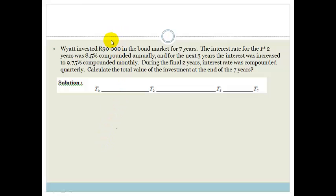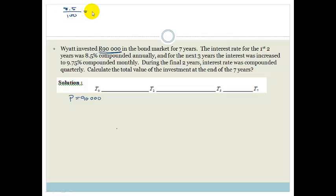At T0, Wyatt's principal was R90,000. He put it in the bond market for a full 7 years. For the first 2 years, the interest rate was 8.5% compounded annually. We need to convert 8.5 to a decimal by dividing by 100, so that becomes 0.085. It's compounded annually, so the interest rate is simply 0.085.